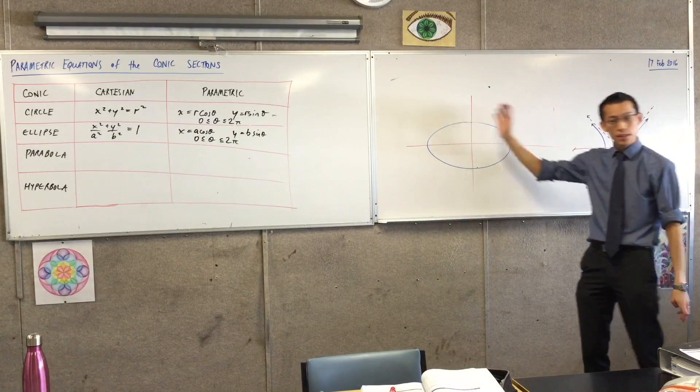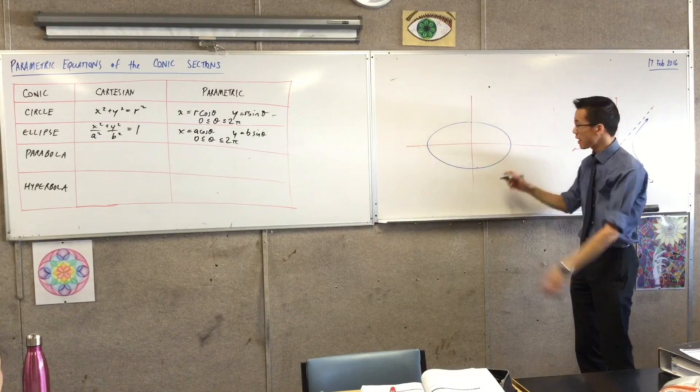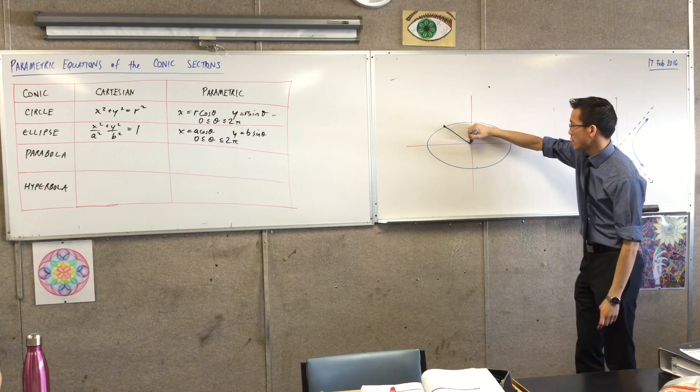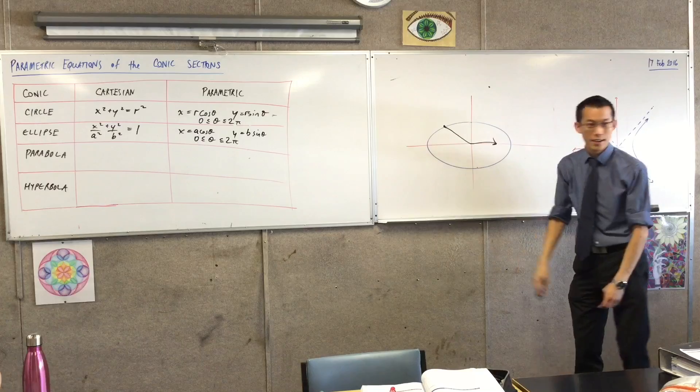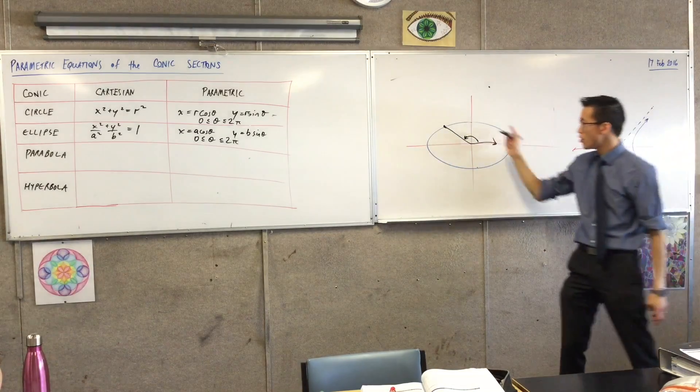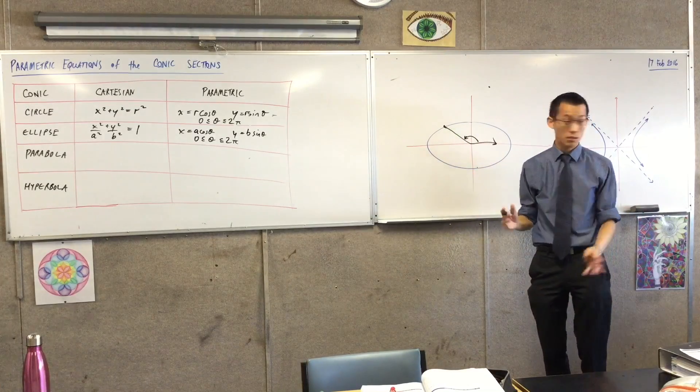So you can see, I can, just like I can on the circle, I can uniquely pick any point, like say there. And I can say, all right, just measure the angle from that point to the positive x-axis. You've got an angle there. That's the single value you need to know where you are on the ellipse. So that's really good.